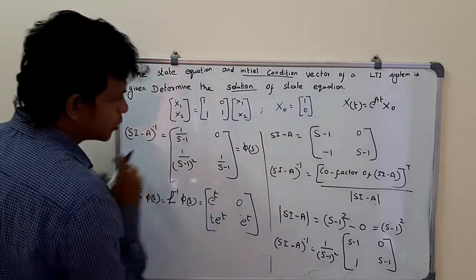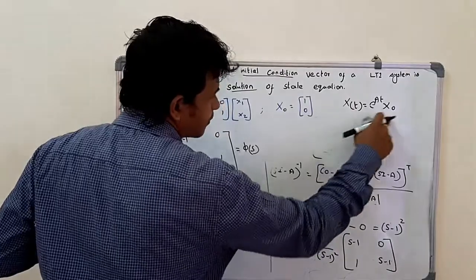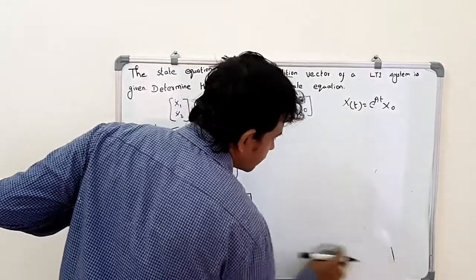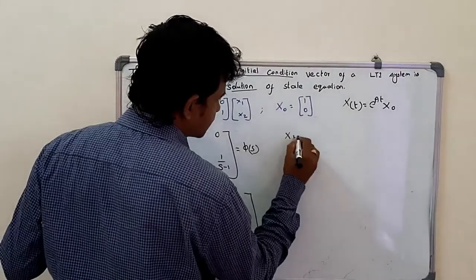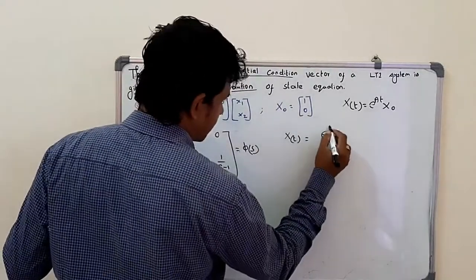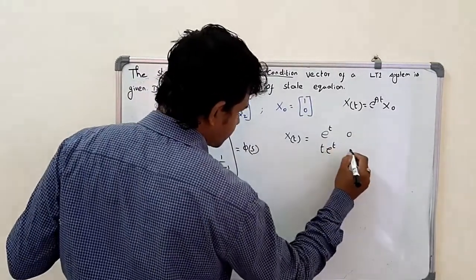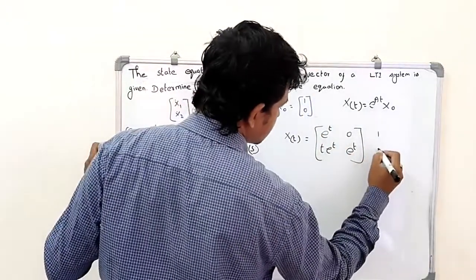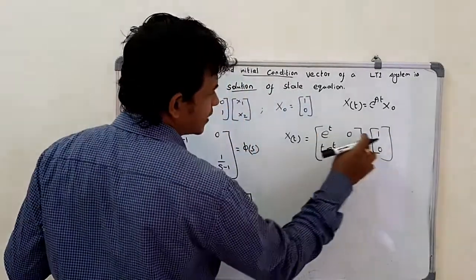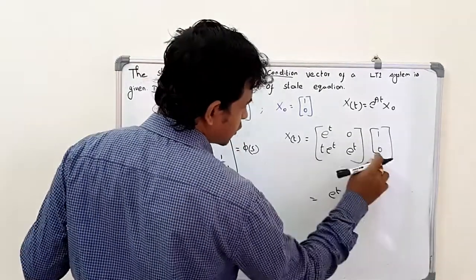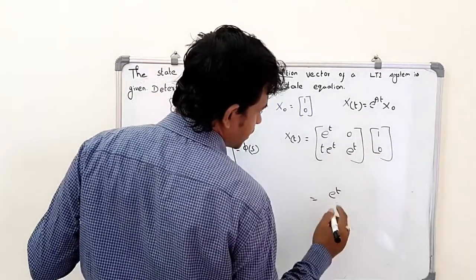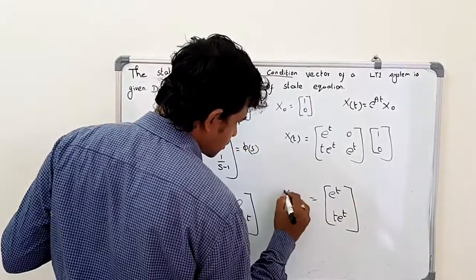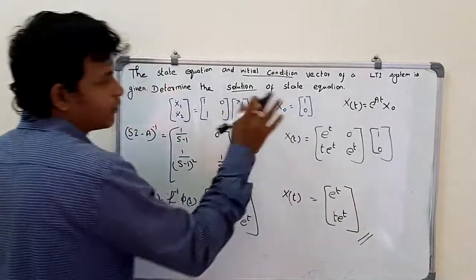Now the solution of the state equation is found using x(t) = e^(At) · x₀. With e^(At) = [e^t, 0; t·e^t, e^t] and x₀ = [1; 0], we get x(t) = [e^t·1 + 0·0; t·e^t·1 + e^t·0] = [e^t; t·e^t]. This is the solution of the given state equation.